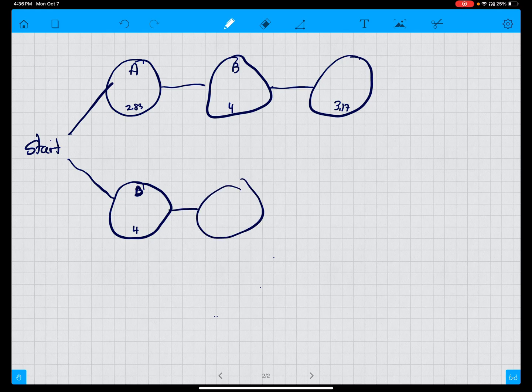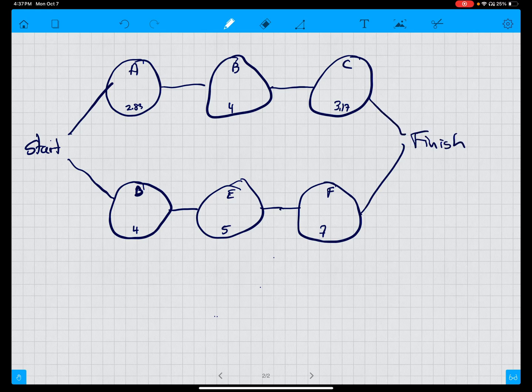E comes out of D, and it's 5. And F comes out of E, and it's 7. And those both then go into a finish node. So we've drawn the basic network with the precedents.